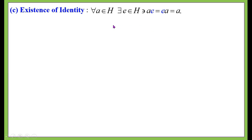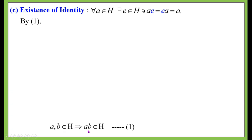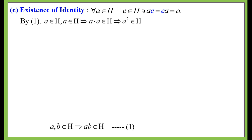Now let us prove the existence of identity. The identity axiom says: for all a ∈ H, there exists e ∈ H such that a·e = e·a = a. By the closure hypothesis, a, a ∈ H implies a·a ∈ H. This implies a² ∈ H.